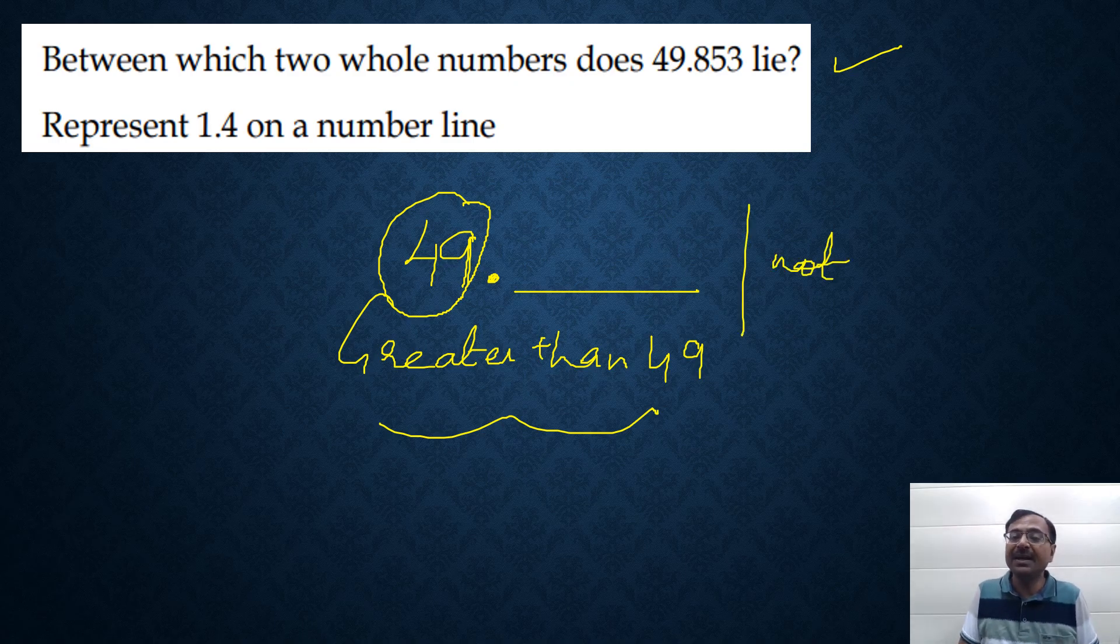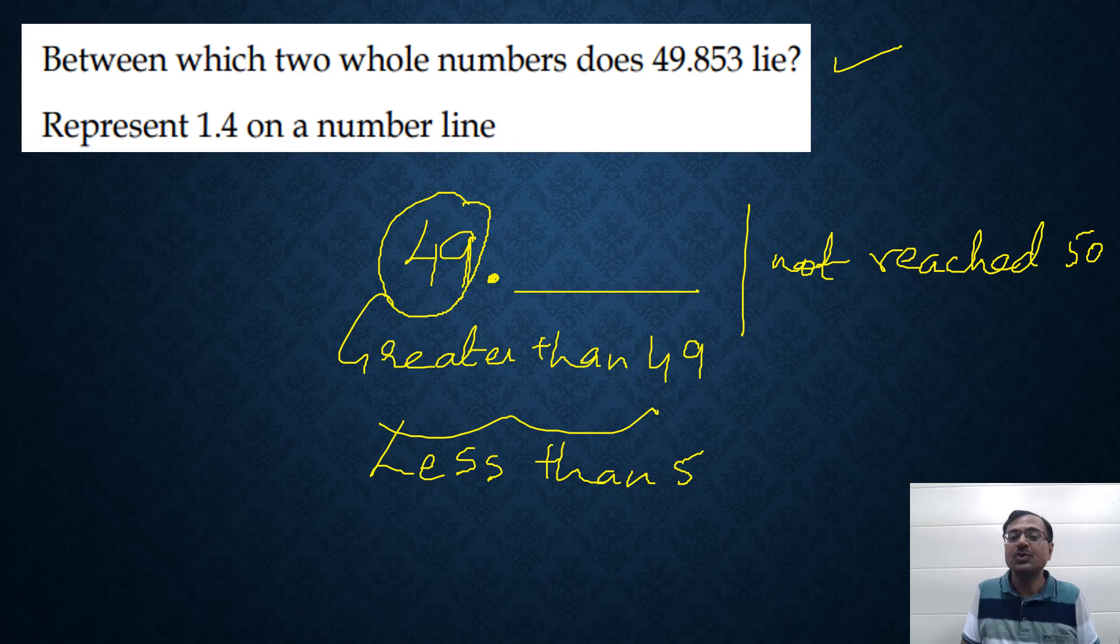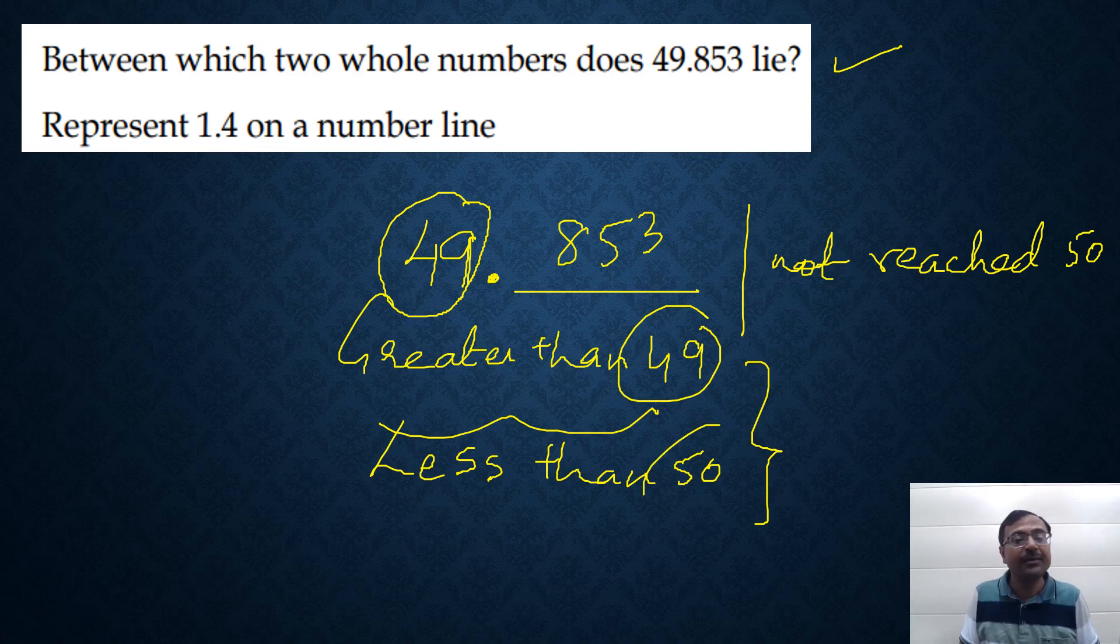It is greater than 49 but since it is 49 point something, it has not reached the next whole number that is 50 and therefore, the number is less than 50. So, between which two numbers does 49.853 lie? It lies between 49 and 50.